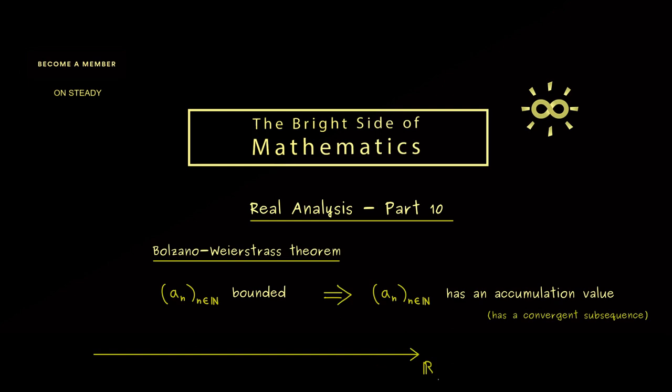One possible visualization would be on the number line where you have a lower bound and an upper bound. Therefore all the sequence members live between those values. Of course they may jump around but we still have infinitely many of them.